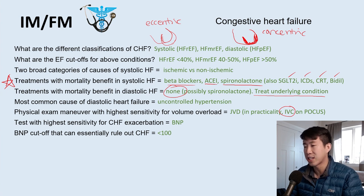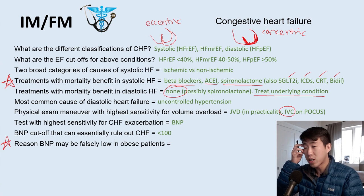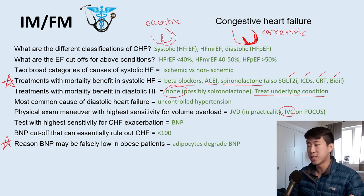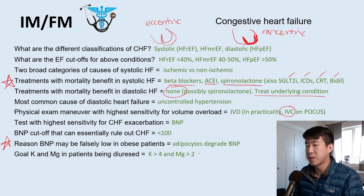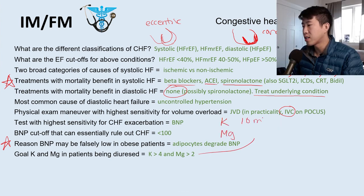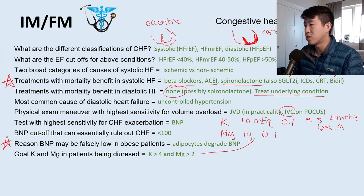A common pimp question: why might BNP be falsely low in obese patients? Because adipocytes degrade BNP — obese patients have many adipocytes. Goal potassium while diuresing is greater than 4 and magnesium greater than 2. The conversion: every 10 mEq of potassium raises serum potassium by 0.1; for magnesium, every 1 gram raises it by 0.1. For example, if potassium is 3.5 and you give 40 mEq, expect a repeat of 3.9. Very useful to know because it comes up frequently.